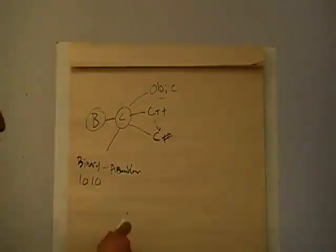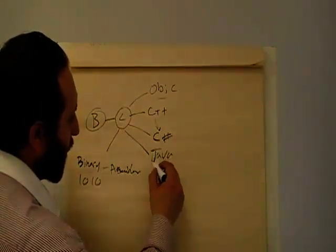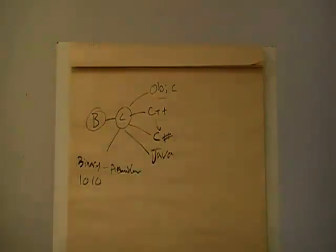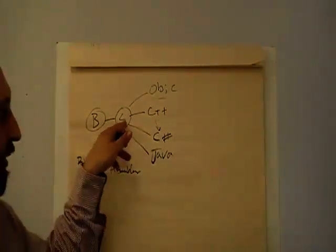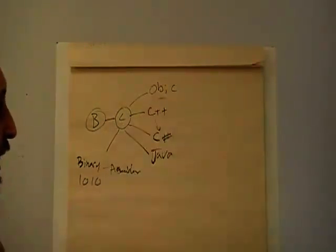And obviously from C as well, you've got your Java. So if you've heard of Java programming, that came from C. So everything, as you can see, originated from C. And then they've then started developing each language.